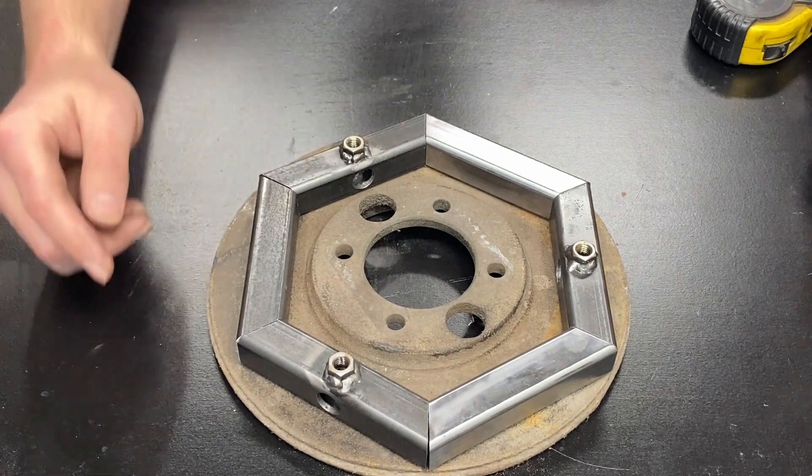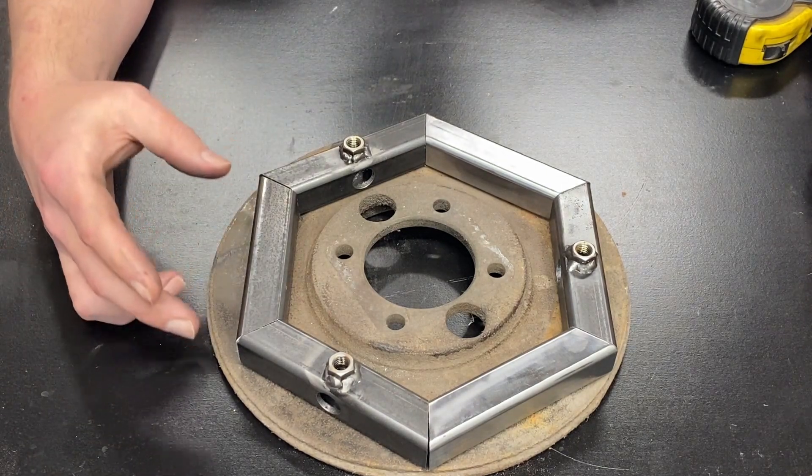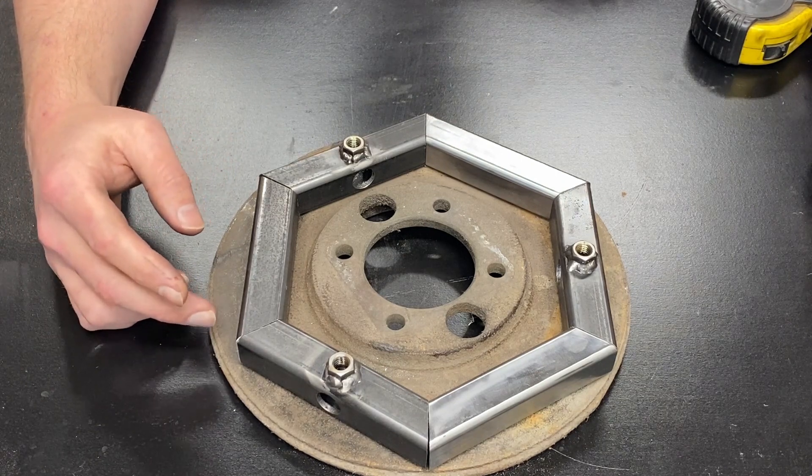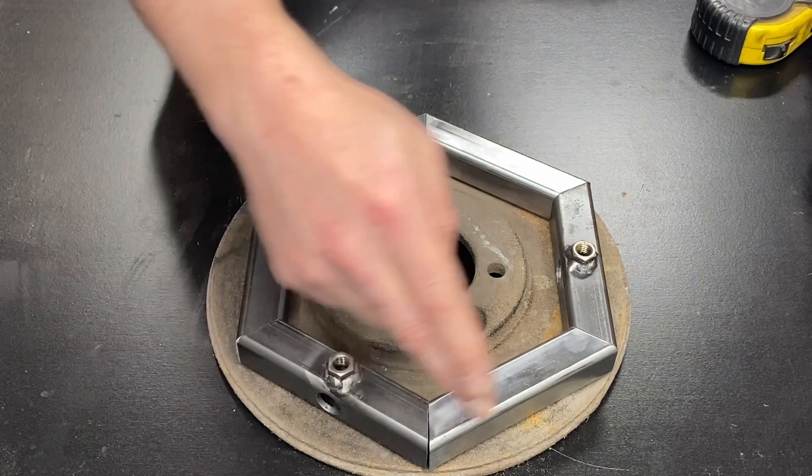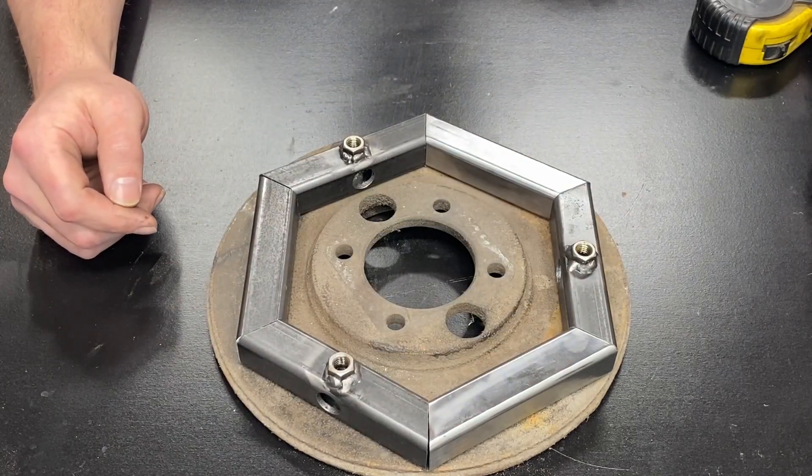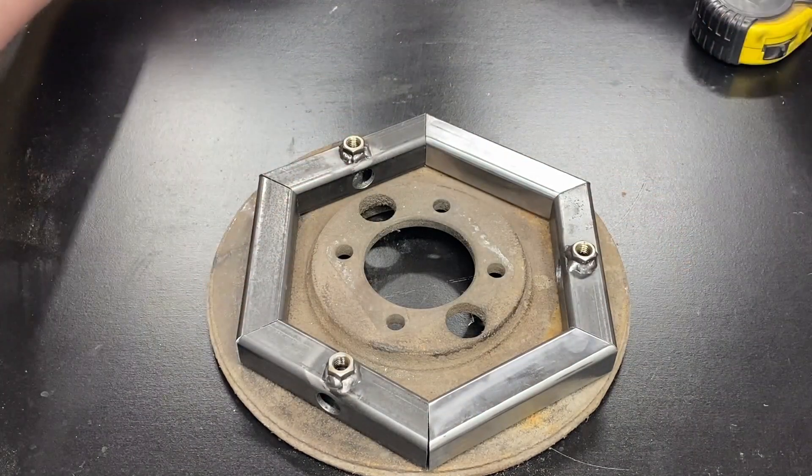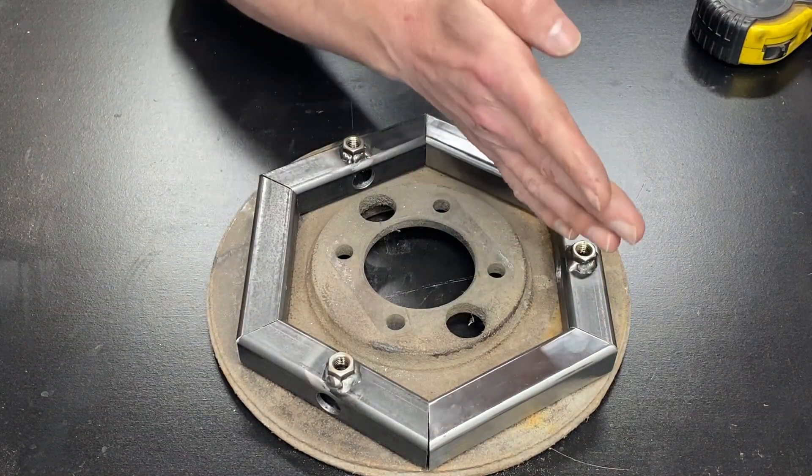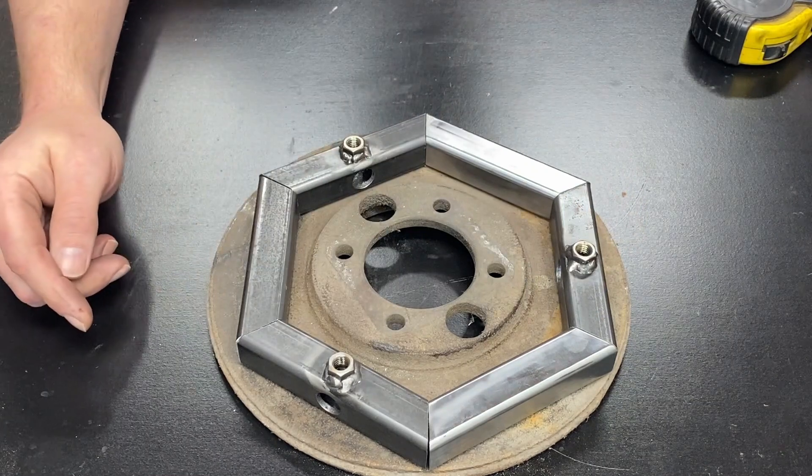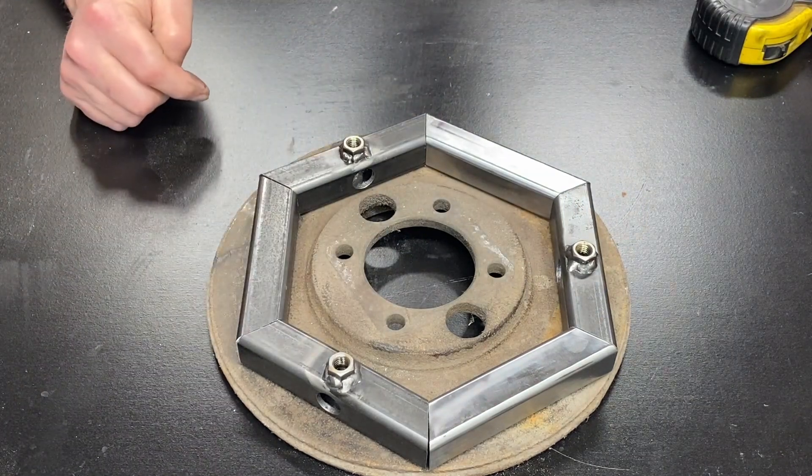Now what's nice about this trick is that the only thing that is truly important that gets accurate is the length. As long as the length is the same on all six pieces, you are going to have a nearly perfect hexagon every time. If this angle is a little too steep or not quite steep enough, this trick compensates for that.